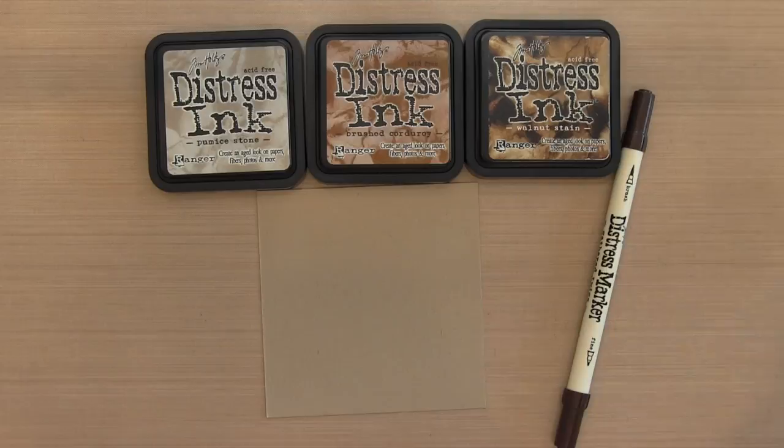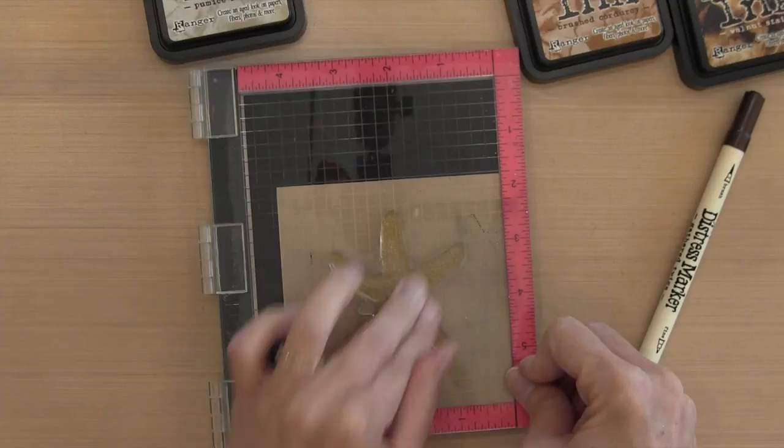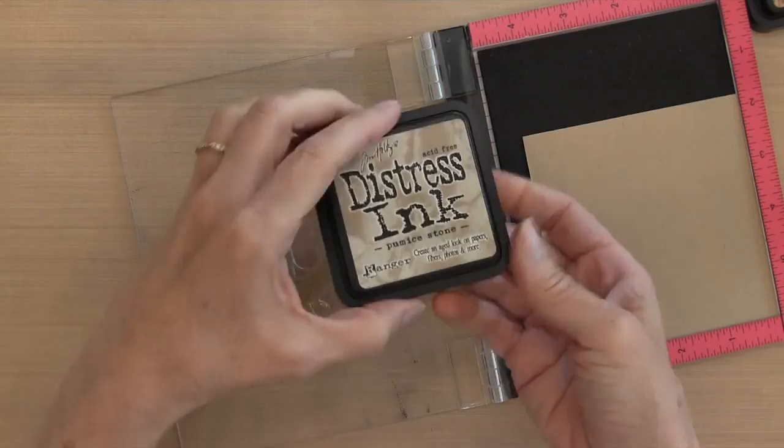Now I'm using three, actually four different colors of Distress ink. I'm going to stamp my first one down. This is a piece of Stampin' Up Crumb Cake cardstock and you don't have to use the MISTI. There's two steps to this, but I'm actually just going to stamp the first one one time. This is Pumice Stone, so I'm going to stamp it right there in the middle of my Crumb Cake cardstock.